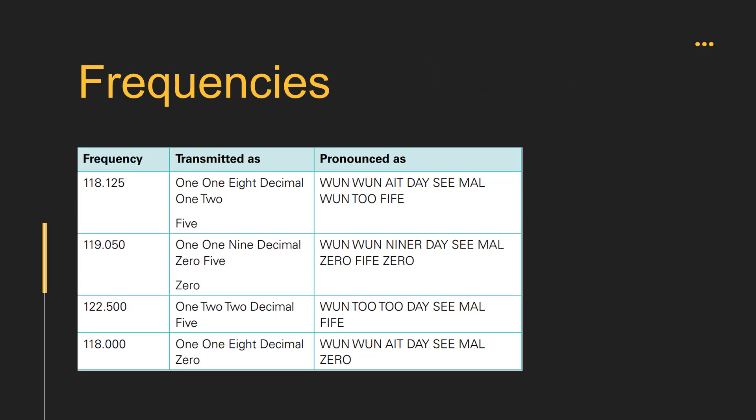Now we will learn about frequencies. All six figures shall be used when identifying frequencies, irrespective of whether they are 25 kilohertz or other kilohertz spacing. Exceptionally, when the two final digits of the frequency are both zero, only the first four digits need be given. Examples: frequency one one eight decimal one two five; one one niner decimal zero five zero; one two two decimal five; one one eight decimal zero.